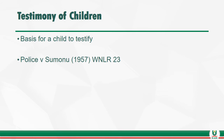The court can ask the child the name of his or her parents, or the name of his school. If the child passes this preliminary test, the court must note in its records that the child is possessed of sufficient intelligence to understand the questions put to him and provide rational answers. The court then goes forward to determine whether the child understands the nature of an oath — asking the child whether he understands the purpose and nature of the oath and the essence of telling the truth. If the child does not pass this second test, he can still give evidence in court, but he cannot give sworn evidence.